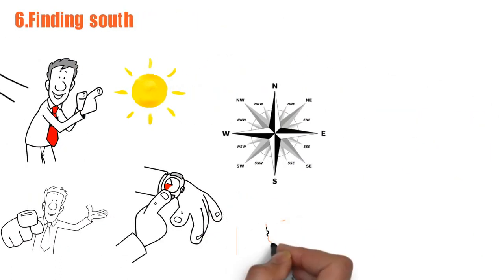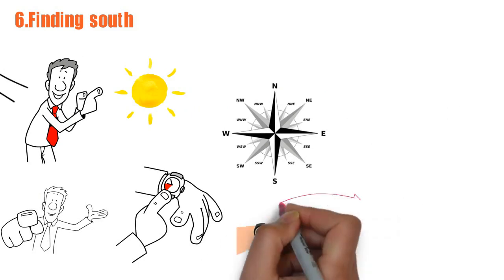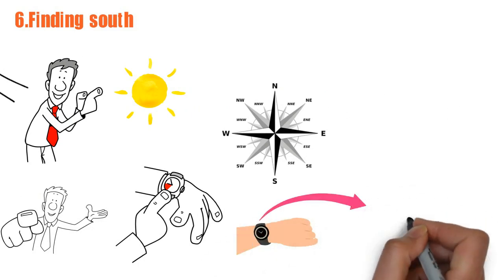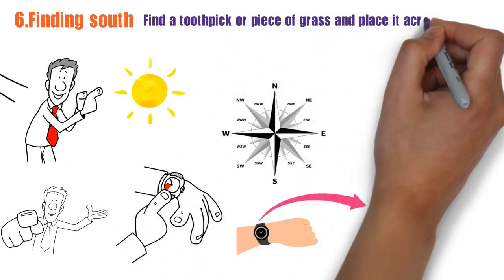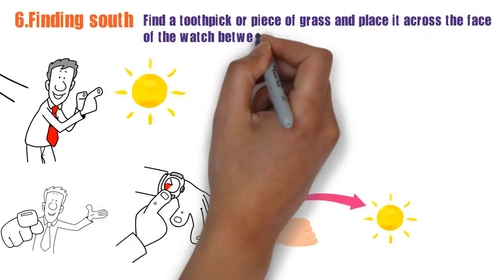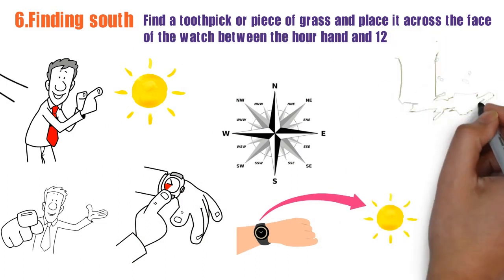Place the watch flat on your palm with the hour hand pointing to the sun. Find a toothpick or piece of grass and place it along the face of the watch between the hour hand and 12. The end of the toothpick or grass that is closest to the 12 should be pointing due south.